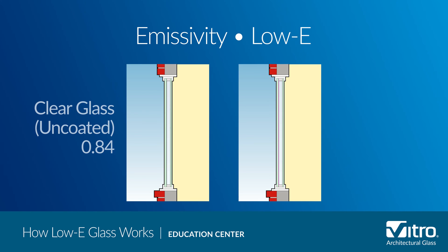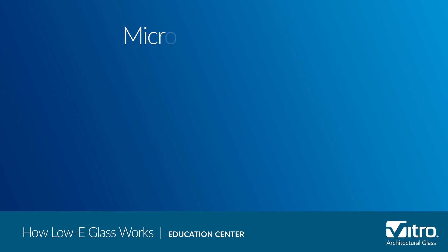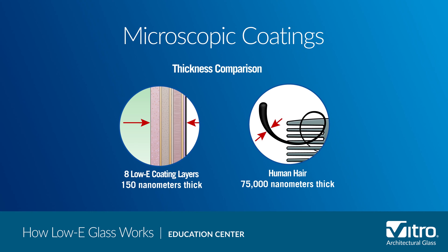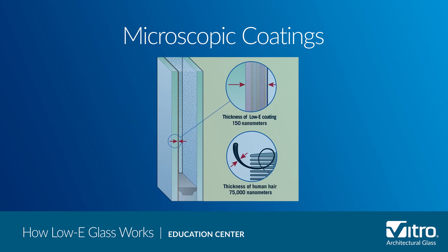This is where low-e glass coatings come into play. For example, uncoated glass has an emissivity of 0.84, while Solar Band 70 Solar Control low-e glass has an emissivity of 0.02. Low-e glass is a microscopically thin transparent coating that reflects long-wave infrared energy, or heat. Some low-e coatings also reflect significant amounts of short-wave solar infrared energy.